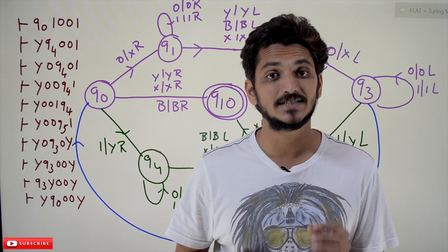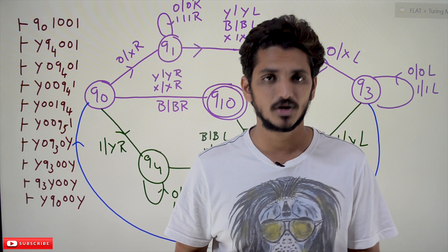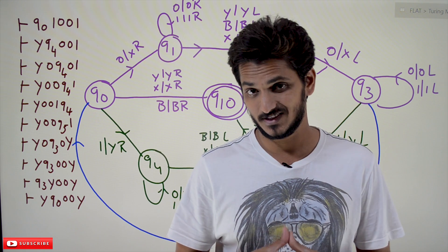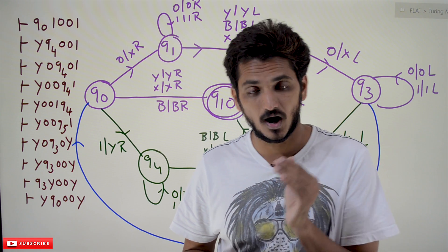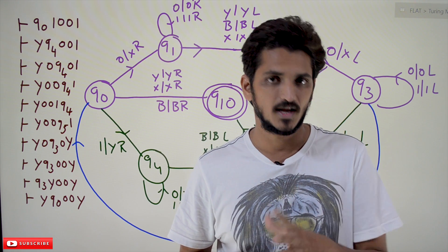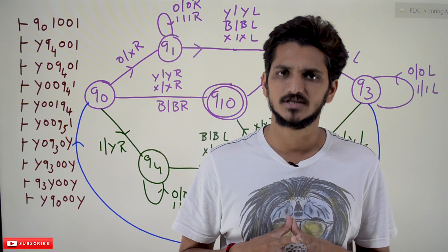In this class, we will discuss instantaneous description for a Turing machine. In our previous class, we clearly discussed acceptance of Turing machine using halt state. Please watch that class and come back here. The link for the playlist is provided in the description below.